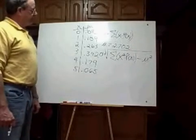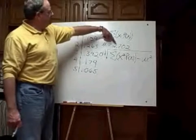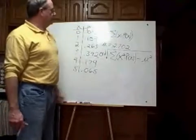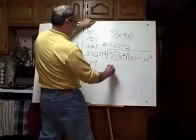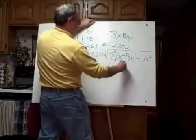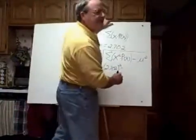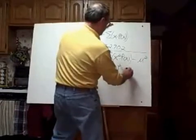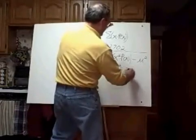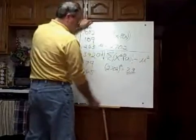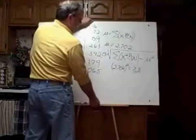Well, let's go ahead and do that. First of all, if the mean mu is 2.702, and if I square that, 2.702 squared is approximately 7.3. So that's what we'd be subtracting at the very end before we take the square root.